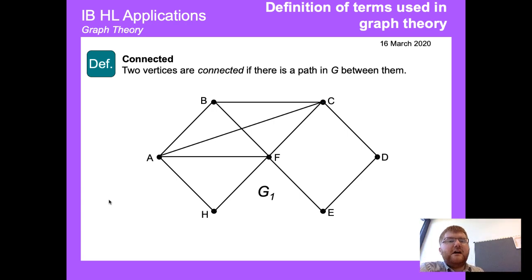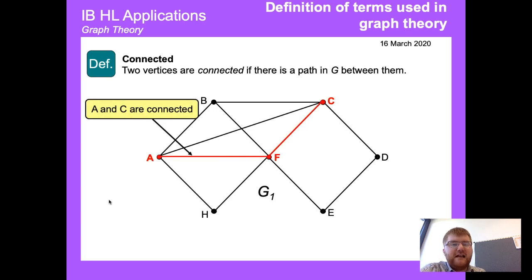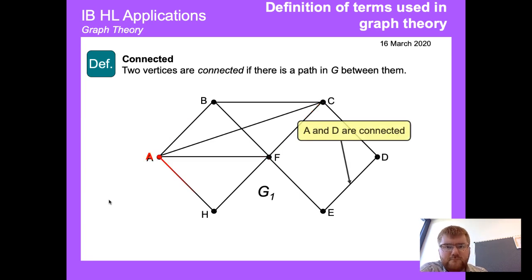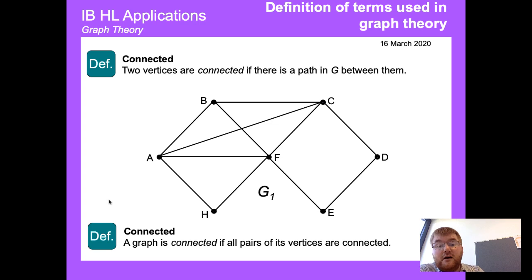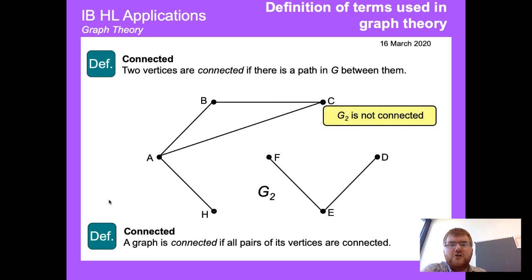Two vertices are connected if there is a path between them in G. For example, A and C are connected — you could go A to B to C, or A to F to C, or directly A to C. A and D are connected via the path A-H-F-E-D. A graph is connected if all pairs of its vertices are connected. Graph G2 is clearly not connected because there is no path from E to B.